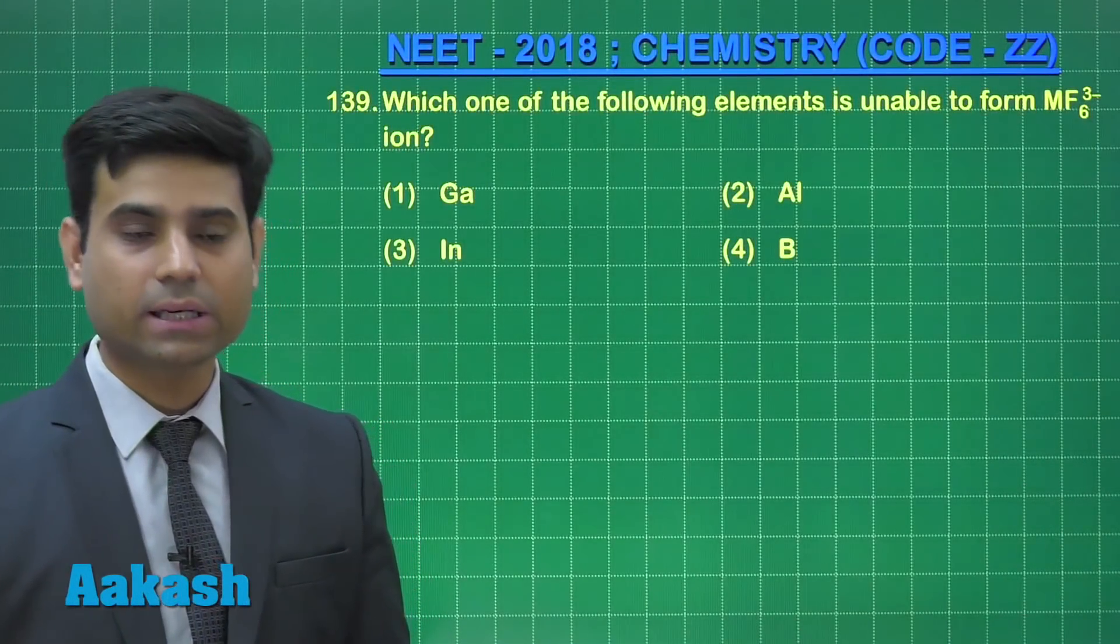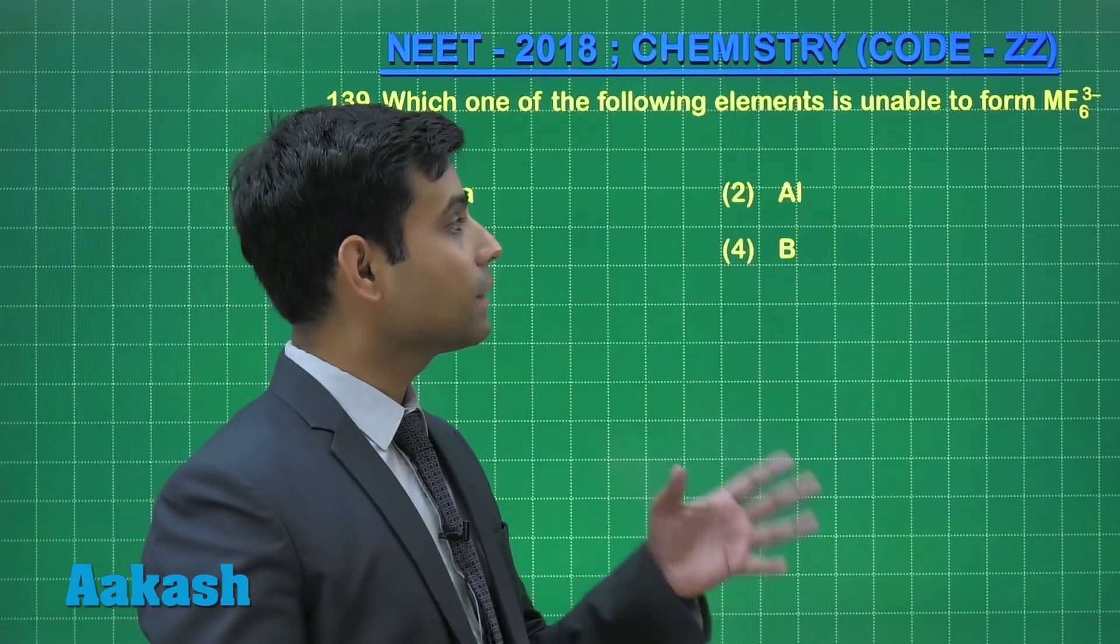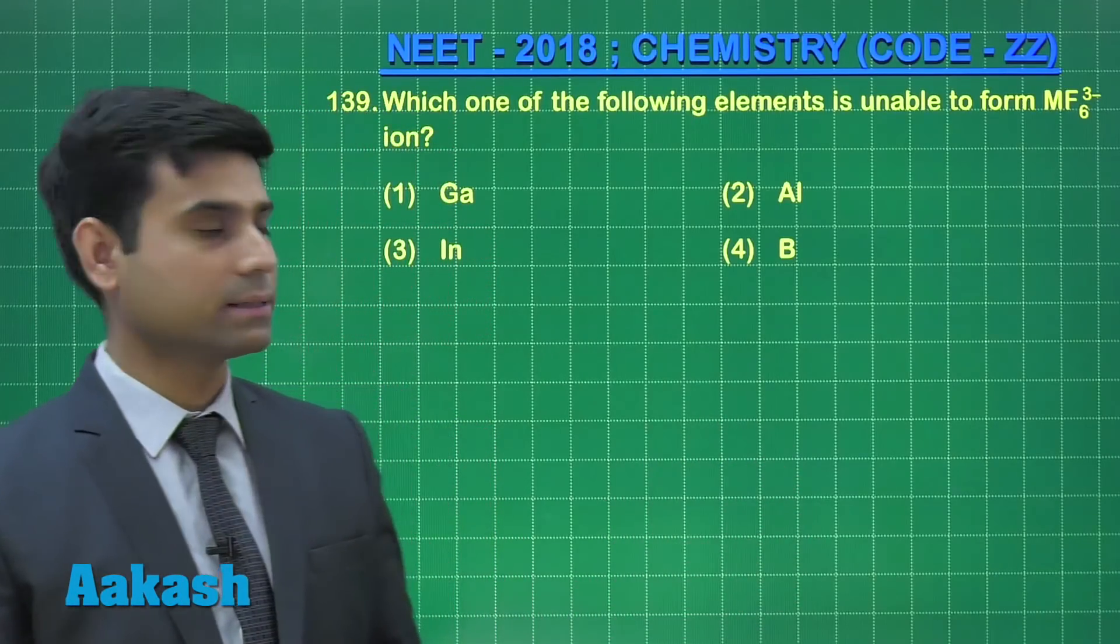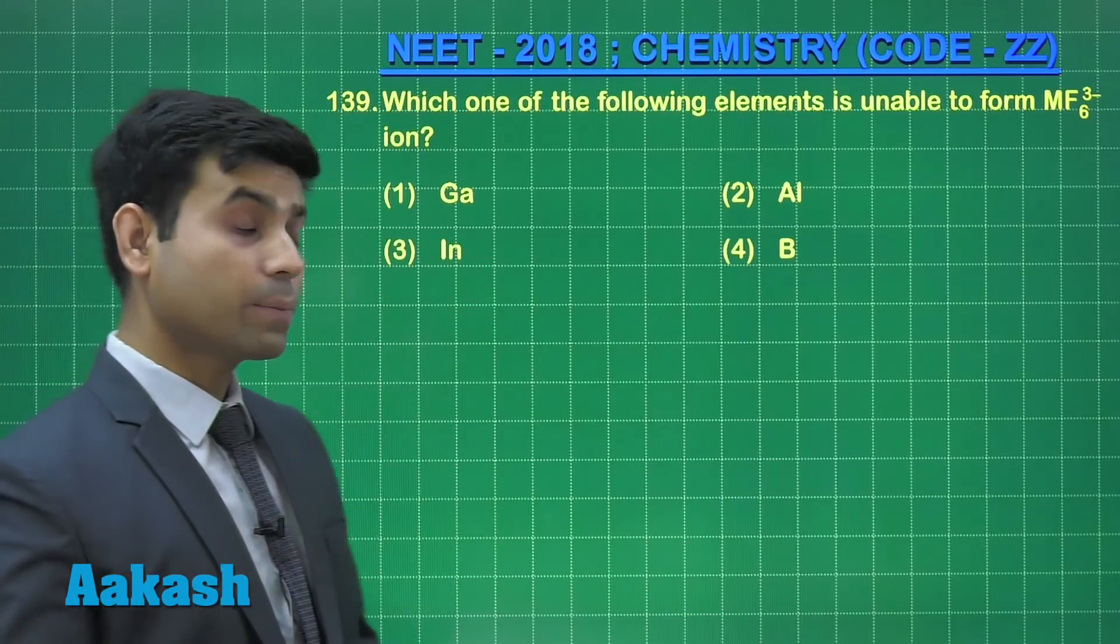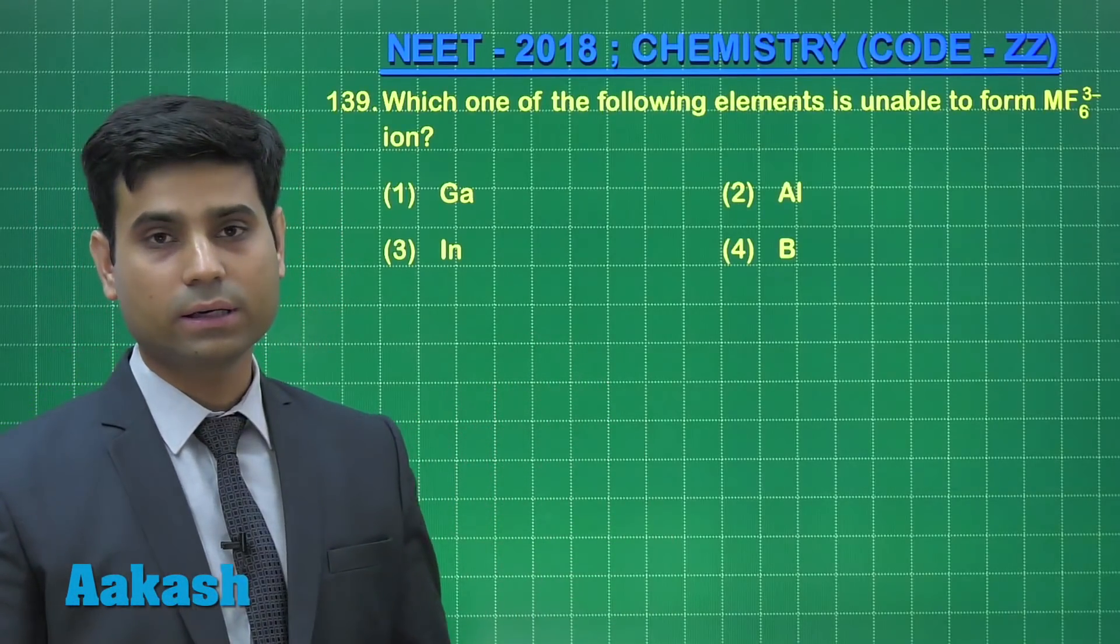The next question is question number 139, which says which one of the following elements is unable to form MF6³⁻ ion. The options are gallium, aluminium, indium, and boron.